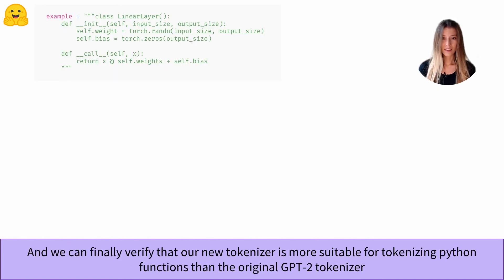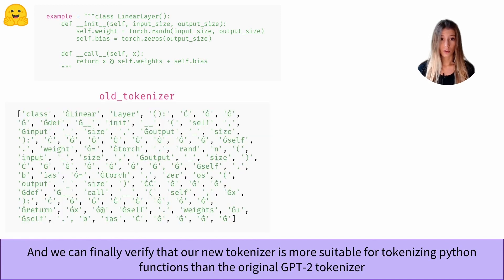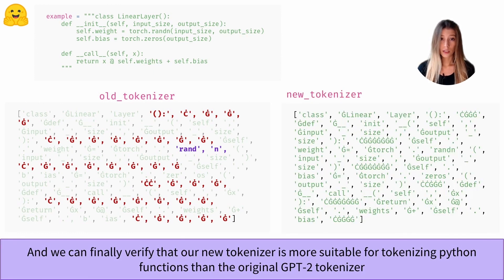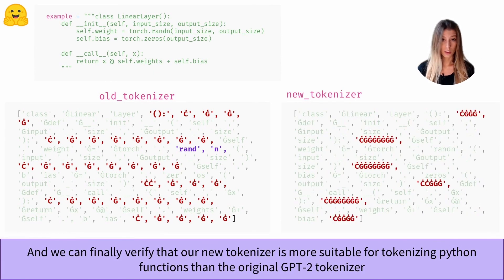Let's see on an example whether it was useful to retrain a tokenizer similar to the GPT-2 one. With the original GPT-2 tokenizer, we see that all spaces are isolated and the method name 'random' — relatively common in Python code — is split into two tokens. With our new tokenizer, single and double indentations have been learned, and the method 'random' is tokenized into a single token.